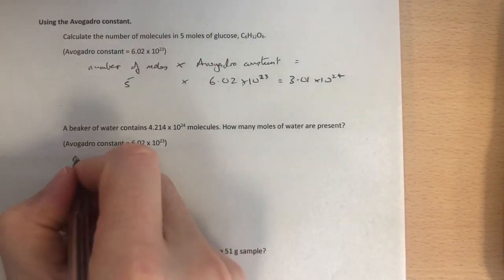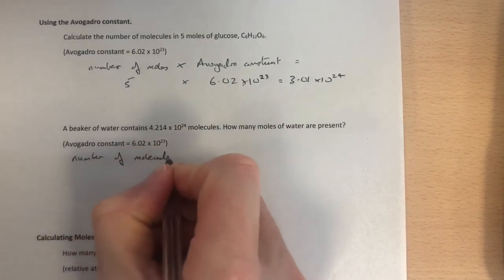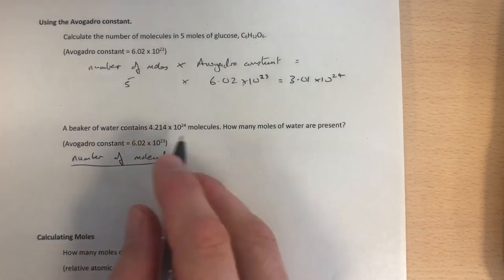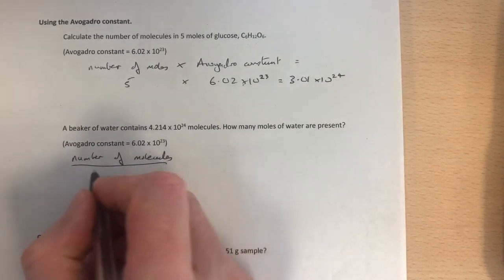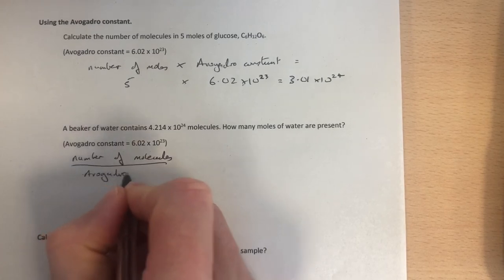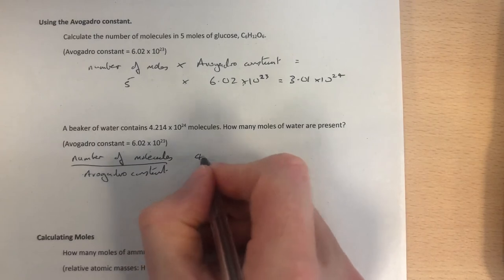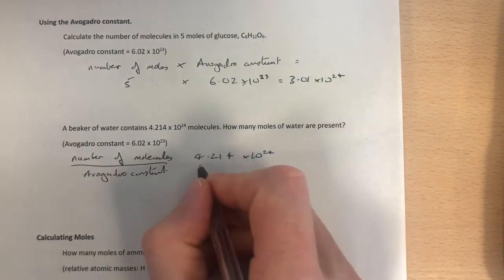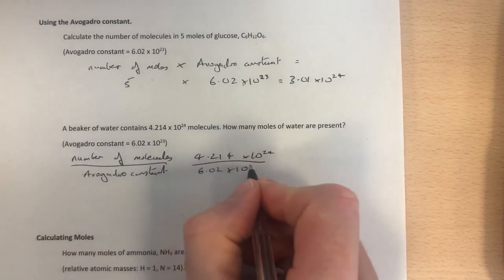We're going to do the number of molecules, or the number of particles, depending on how the question is worded. The number of molecules, or the number of atoms maybe even, depending on how the question is worded. The number of molecules divided by the Avogadro constant, the dozen if you like, the name given to the number. So this time, 4.214 times 10 to the 24, divided by the Avogadro constant, 6.02 times 10 to the 23.